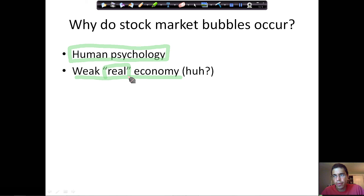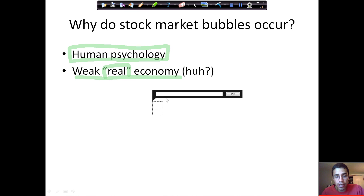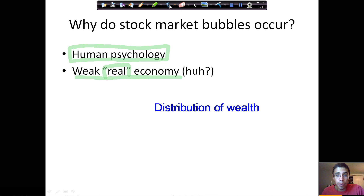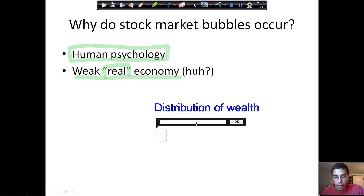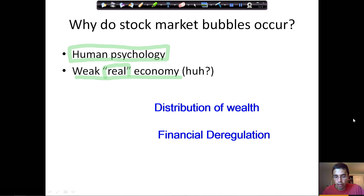I want everyone to keep that in mind and think about why that might lead to a stock market bubble. Part of it has to do with the distribution of wealth, and part of the reason has to do with financial deregulation. Those are two preconditions for a weak real economy to lead to a stock market bubble, and we'll be discussing that in class. I hope everyone understood the video and it was clear. See you guys in the next video.